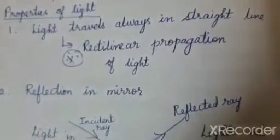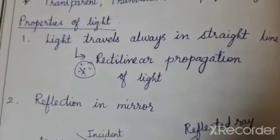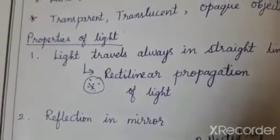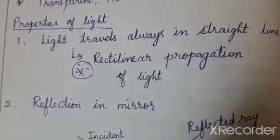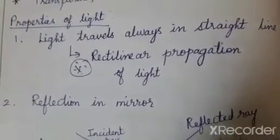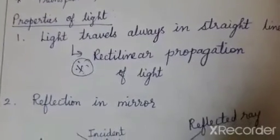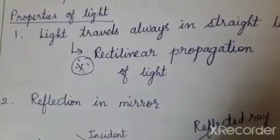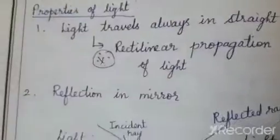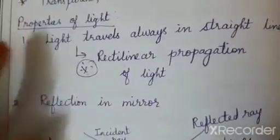Now let us move to the properties of light. What is a property? When I describe a person — if it is a boy, I say he has short hair, he is strong and tall. If it is a grandparent, I say they are old, their skin is loose and they have grey hair. Similarly, to understand light more, we need to know about its properties — its characteristics — what light actually is and how it appears.